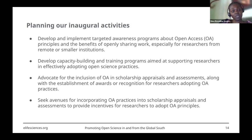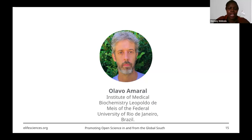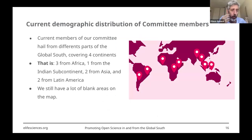Thank you very much for taking us through the vision. I would now like to ask Olavo to take us through the next slides. So this is our current distribution — it's still very patchy. The Global South is a very heterogeneous construct. There are huge differences between Brazil, Kenya, Thailand, and China — we're representing something that's much bigger than where we actually come from. We'd definitely like to improve our distribution. We have people from Africa, Bangladesh, Southeast Asia, and Latin America, but there are still huge gaps on the map.